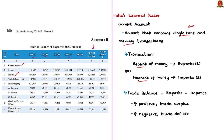We receive money only when we export a merchandise good. So receipt refers to exports in the external sector. The export of merchandise goods happens from India to abroad — we produce a material here and export it to foreign nations. By exporting the goods we will receive some money. The exact opposite to this is payments.